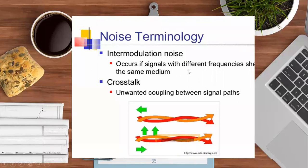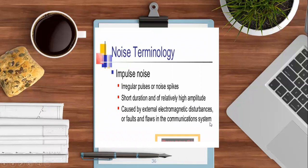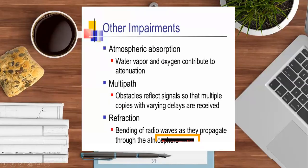Intermodulation noise occurs when signals with different frequencies share the same medium, creating unwanted coupling between signals — like a cross-connection when you dial a correct number but hear someone else's call. Impulse noise is an irregular, sudden noise of short duration and relatively high amplitude, caused by external electromagnetic disturbances or faults in the communication system — for example, lightning during rainy season. Atmospheric absorption from water vapor and oxygen also contributes to signal attenuation.